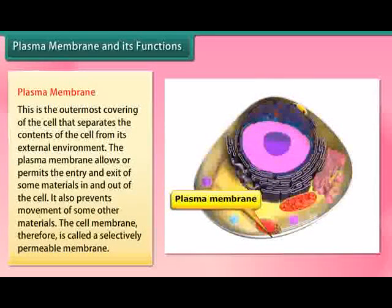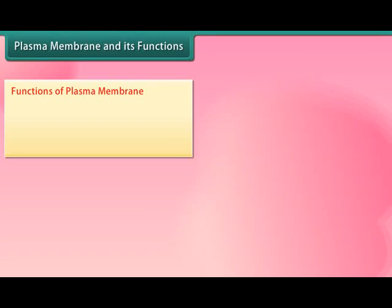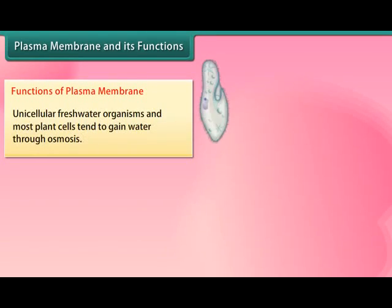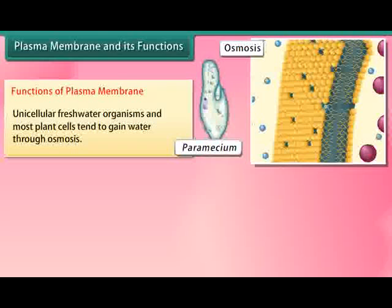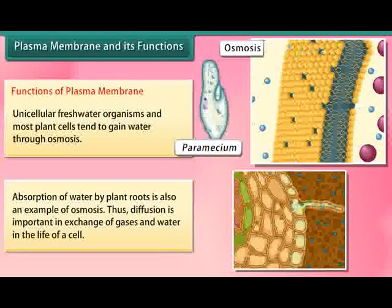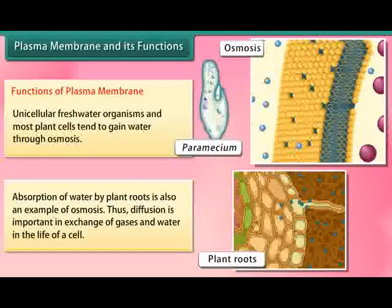Plasma membrane: This is the outermost covering of the cell that separates the contents of the cell from its external environment. Unicellular freshwater organisms and most plant cells tend to gain water through osmosis. Absorption of water by plant roots is also an example of osmosis. Thus, diffusion is important in the exchange of gases and water in the life of a cell.